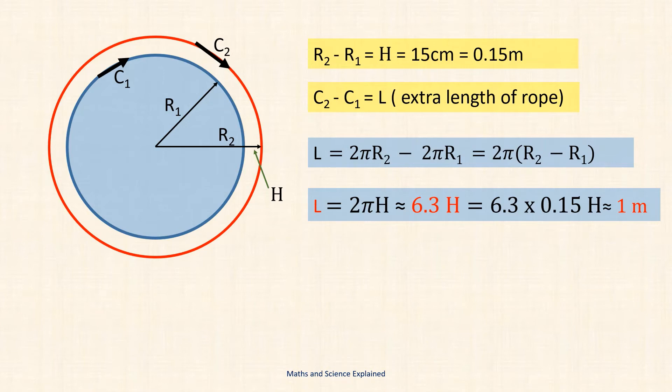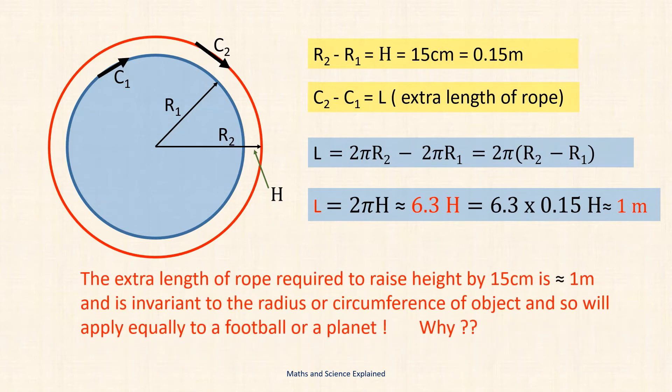Now this is a truly astounding result for a couple of reasons. Firstly intuitively the length just looks too small and secondly the derivation of the solution did not require any information on the dimensions of the object involved. Thus this is a unique solution which is invariant to the size of an object and would apply to any spherical object from a football to a planet. But why is this so and is there a simpler intuitive explanation?